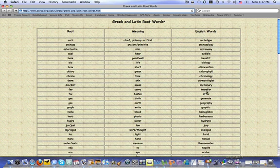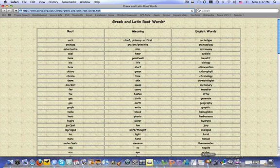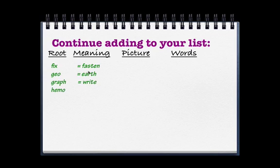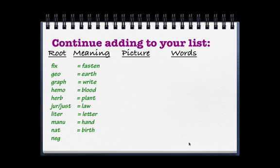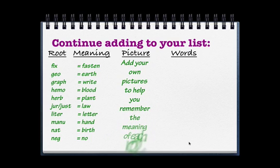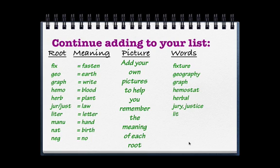They give you some examples here, but you can also look up more — especially if you go into Google and search 'Greek and Latin root words.' You'll find other websites with the same content. Once again: the root, the meaning, the picture, and you add your words. Go ahead and go to the website that contains these for you. Whatever you do, you must remember that when you add your own pictures, it's for you to remember the meaning of each root. The more you put into it, the more you get out of it.